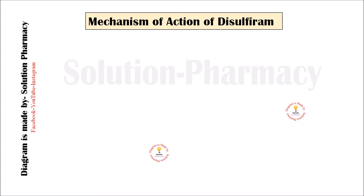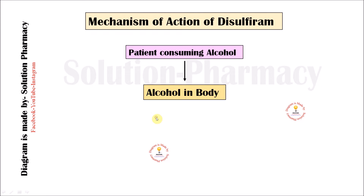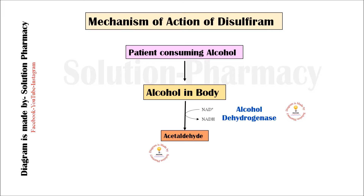Alcoholism means the uncontrolled consumption of alcohol by an individual. Normally, when a person consumes alcohol, it metabolizes in the body — meaning it is converted into acetaldehyde in the presence of the enzyme alcohol dehydrogenase and coenzyme NAD (nicotinamide adenine dinucleotide). The NAD accepts hydrogen from the alcohol and is converted into NADH, while the alcohol is oxidized to acetaldehyde.